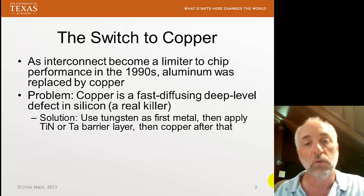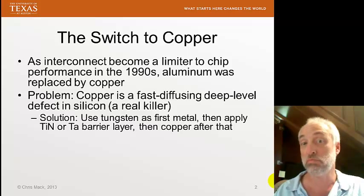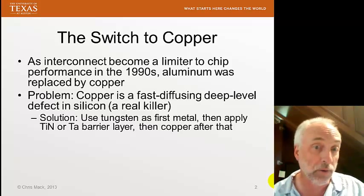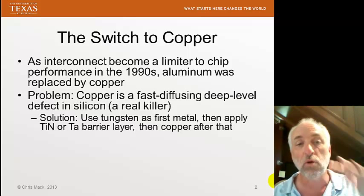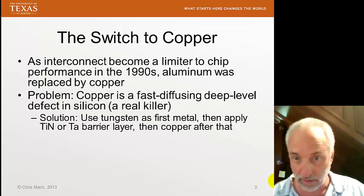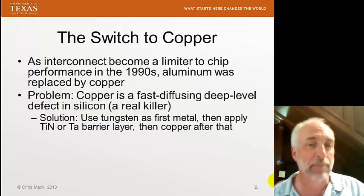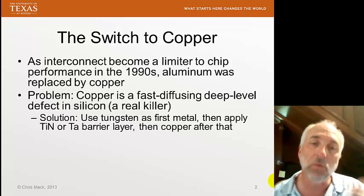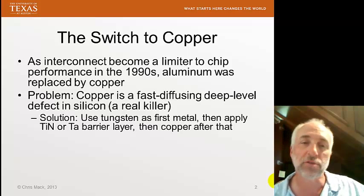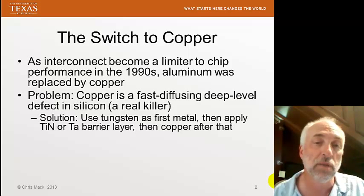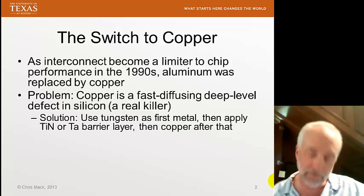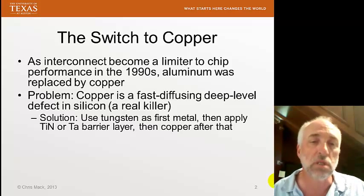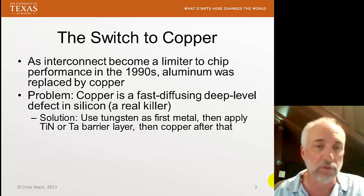We do more than that. We actually separate our fabs into the portion of the fab that has copper in it and the rest of the fab where copper is not allowed. As we build up our transistors and before we add the barrier layer, we don't allow any copper in that portion of the fab. Only after we've added those barrier layers do we ship the wafers off to the portion of the fab where we use copper. The entire structure of the fab is geared towards this issue of copper as a deep-level impurity for silicon.